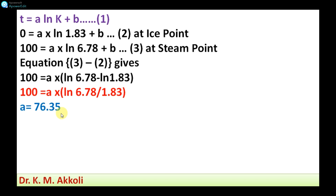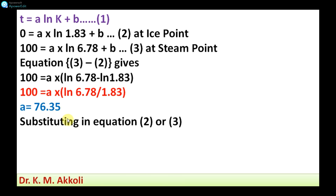From this equation we can find A. After calculation we get the constant A equal to 76.35. Substituting this A value into equation 2 — because at ice point the temperature value is 0 — and calculating, we get B equal to -46.143.